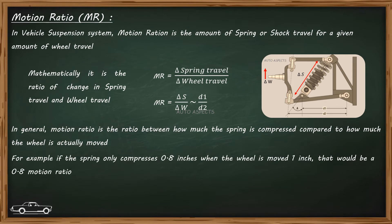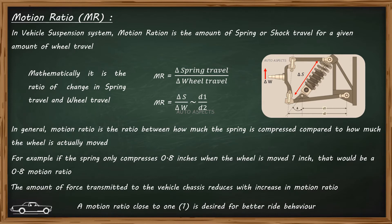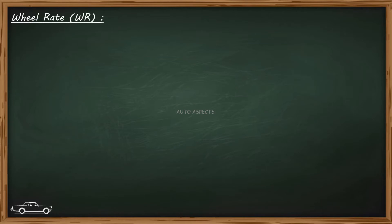For example, if a spring compresses 0.8 inches when a wheel is moved by 1 inch, then the motion ratio is said to be 0.8. Motion ratios close to 1 is desirable for a better ride. Now let's move on to wheel rate.